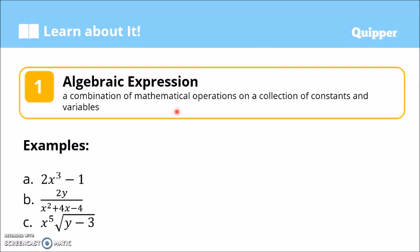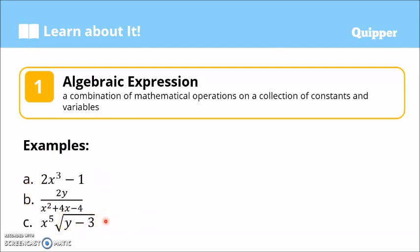When we say mathematical operations, of course that includes addition, multiplication, subtraction, division, and more — such as exponents and square roots. Examples of algebraic expressions are: 2x³ − 1, 2y over x² + 4x − 4, x to the power of 5, and square root of y minus 3.